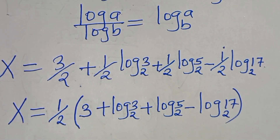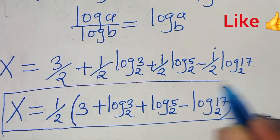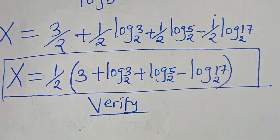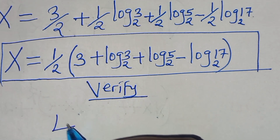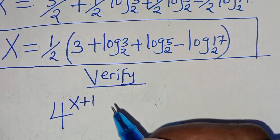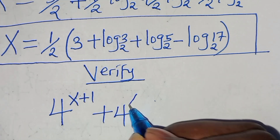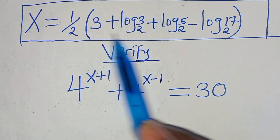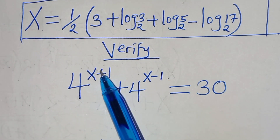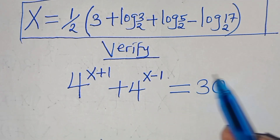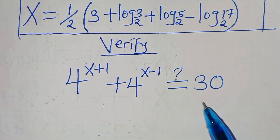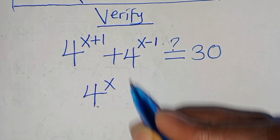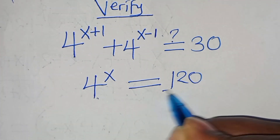That is the value of x. Let's verify this satisfies the equation. If we recall, 4^(x+1) plus 4^(x−1) equals 30. We reduced this to 4^x equals 120 over 17, so let's confirm that the value of x we found gives 4^x equal to 120 over 17.